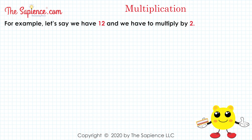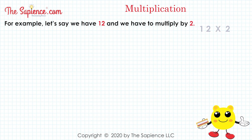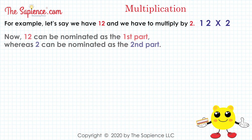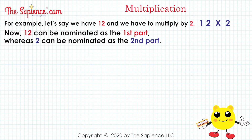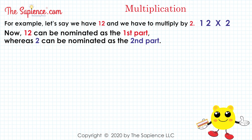For example, let's say we have 12 and we have to multiply by 2. 12 multiplied by 2. Now, 12 can be nominated as the first part, whereas 2 can be nominated as the second part.